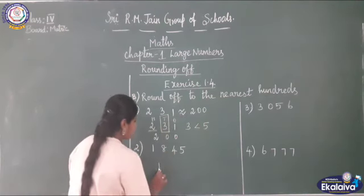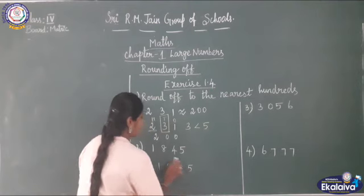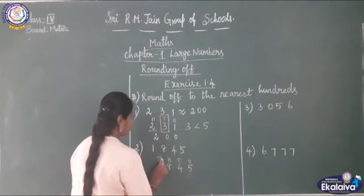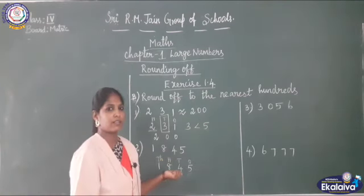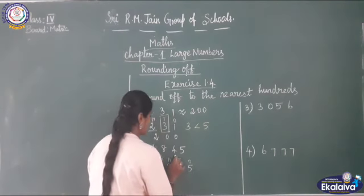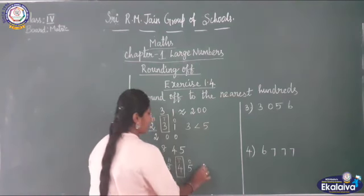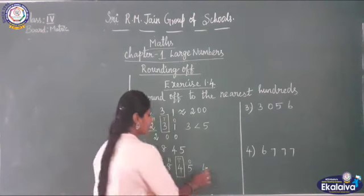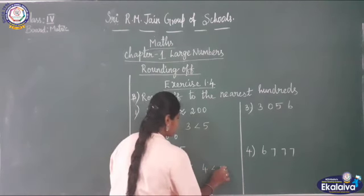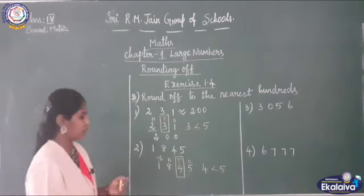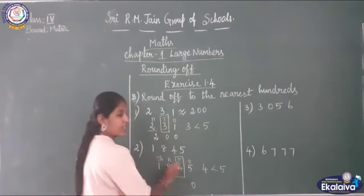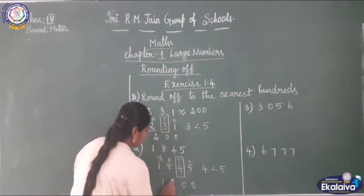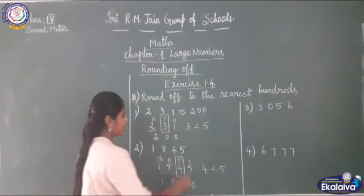Next sum: 1845. Write the place value — ones, tens, hundreds, thousands. Check the tens place. 4 is less than 5. When it is less than 5, put 0 in ones place and 0 in tens place, then write the remaining digits as they are. So the answer is 1800.